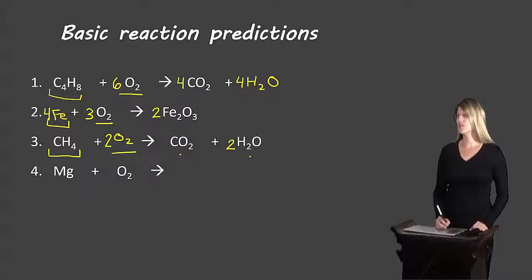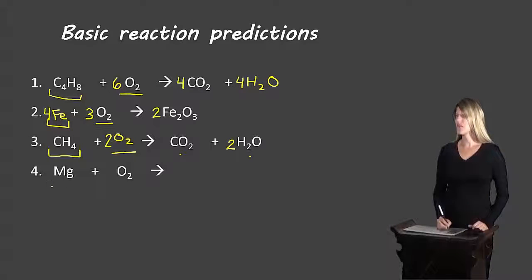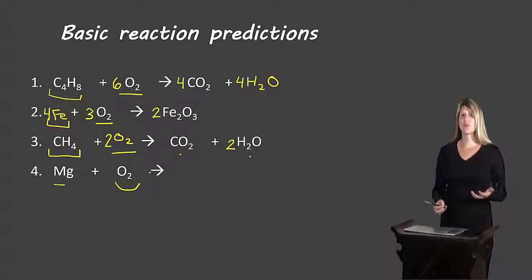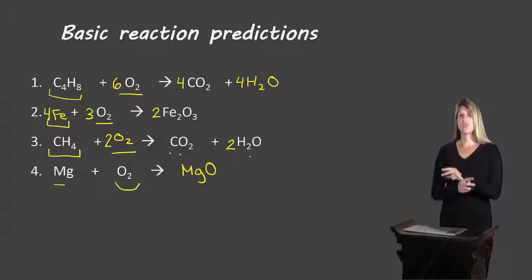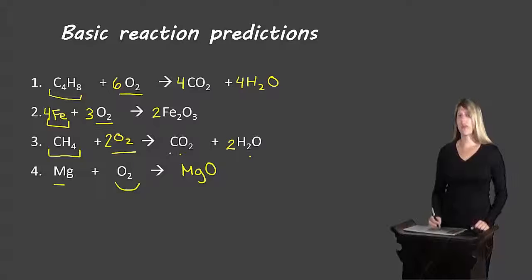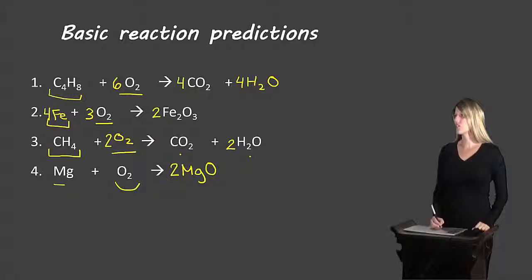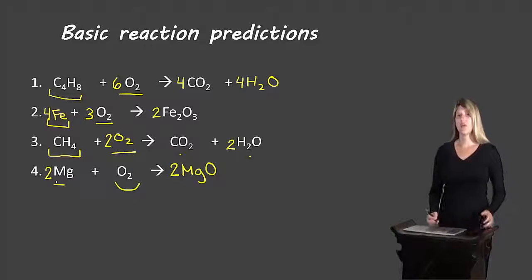We have magnesium and oxygen. Because we're dealing with an element plus oxygen, we know it's combustion and we're going to produce an oxide — an element with oxygen attached — so magnesium and oxygen combined. Magnesium has a 2+ charge and oxygen a 2− charge; using the zero-sum rule, we get 1 magnesium and 1 oxygen, giving the formula MgO. To balance: we have 2 oxygens on the left and 1 on the right, so we put a coefficient of 2 in front of MgO. Now we have 2 magnesium on the right, so we put a 2 on the left, and it's balanced.